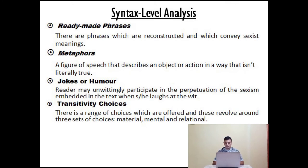The second level in feminist stylistics is syntax level analysis. It consists of four elements. The first is ready-made phrases — phrases which are reconstructed and sexist in meaning. The second is metaphors, a kind of figure of speech. The third is jokes or humor — readers may unwittingly participate in the perpetuation of sexism in text. The last is transitivity choice — a range of choices revolving around three sets: material, mental, and relational.